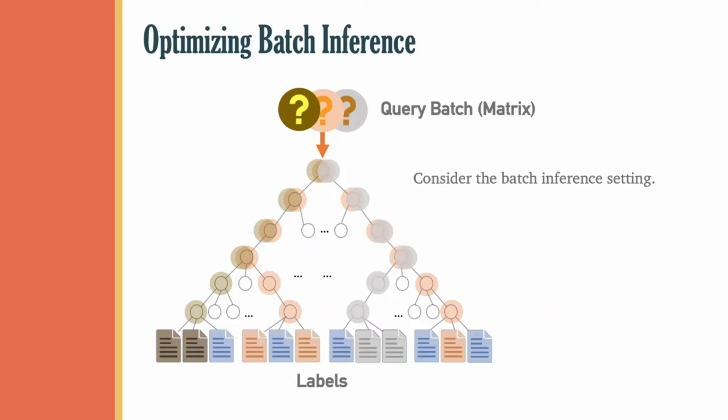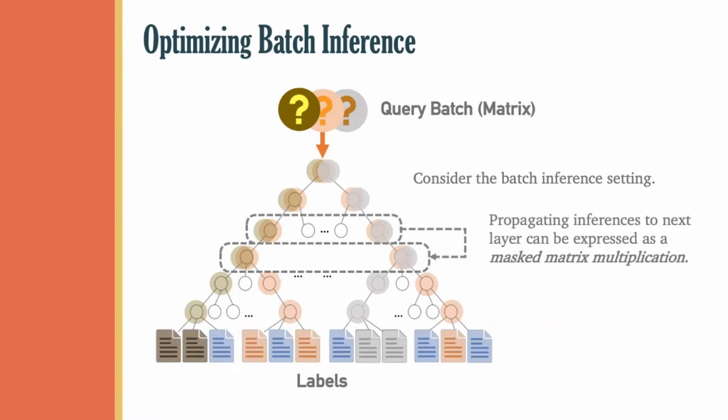The starting point for our optimizations is to note that the act of propagating predictions from one layer of the tree to the next can be expressed as a sparse matrix multiplication. This is due to the linear activations of the constituent models of the tree. With beam search thrown in, this becomes a masked sparse matrix multiplication. Let's take a peek at what this might look like.